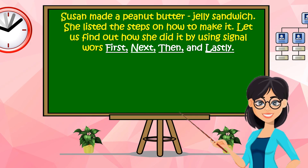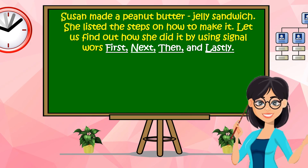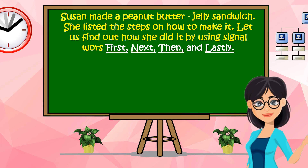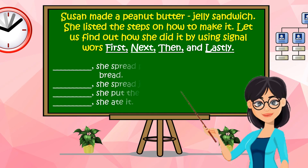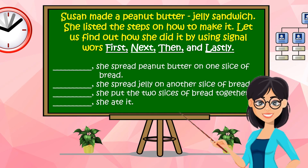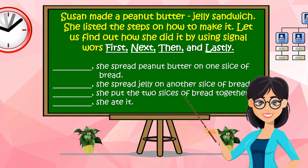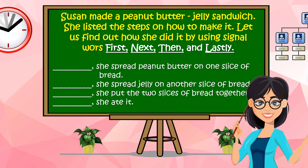Susan made a Peanut Butter Jelly Sandwich. She listed the steps on how to make it. Let us find out how she did it by using signal words: first, next, then, and lastly.